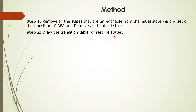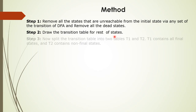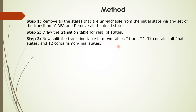After the unreachable and dead states are removed, draw the transition table for the remaining states. Then split the transition table into two tables: T1 and T2, where T1 contains all final states and T2 contains non-final states.